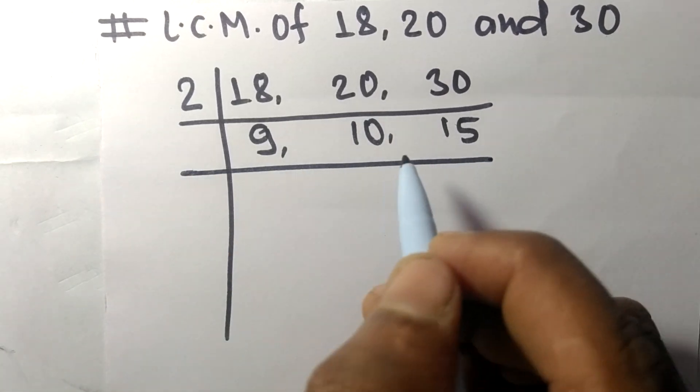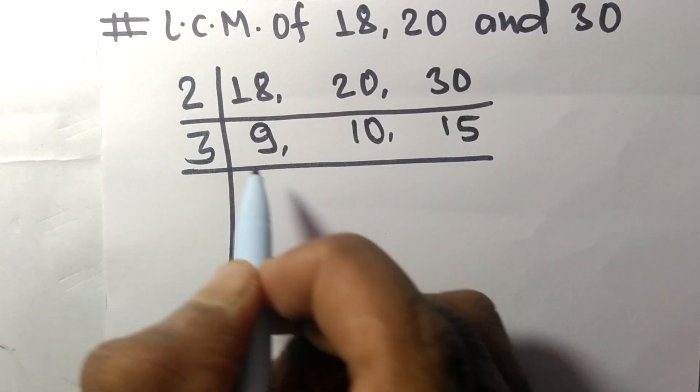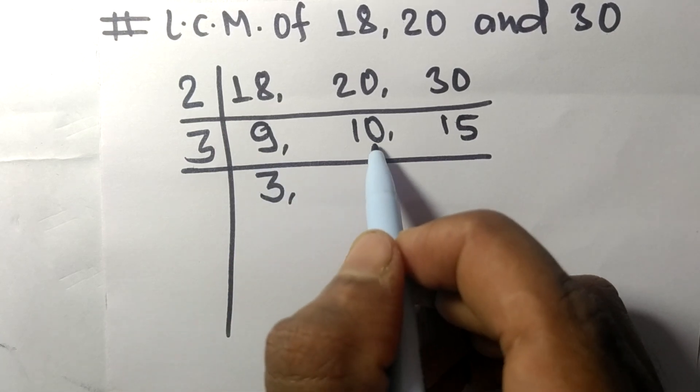Now the numbers 9 and 15 are divisible by 3. So 3 times 3 means 9, 10 not divisible so it stays the same, 3 times 5 means 15.